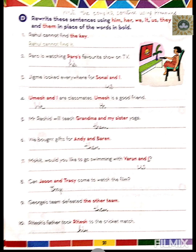Number five: Mr. Rashid will teach grandma and my sister yoga. He will teach them yoga. We use 'them' because I am not there and I am talking about a third person — grandma and my sister. Number six: We bought gifts for Andy and Baron. We bought gifts for them, because Andy and Baron are the third persons I am talking about.